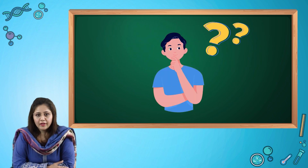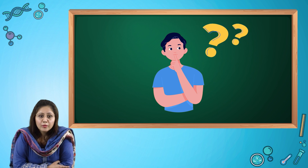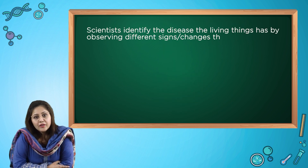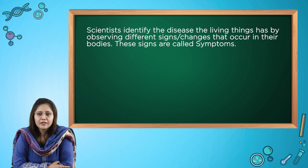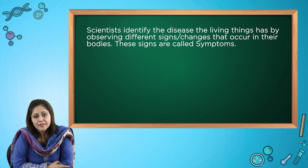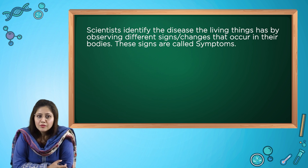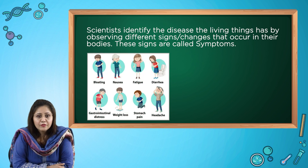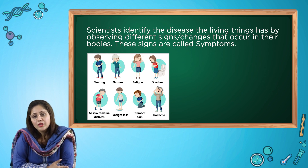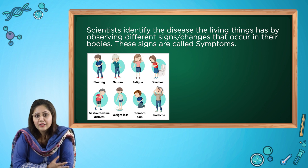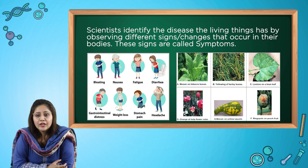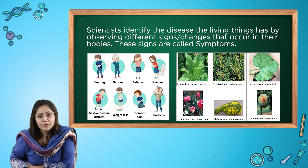Now how do scientists identify that a person is suffering from any disease? Scientists identify the disease a living thing has by observing different signs or changes that occur in their bodies. These signs are called symptoms. Some symptoms for humans are bloating, nausea, fatigue, diarrhea, weight loss, stomach pain, and headaches. There are also many symptoms we can see in plants, like mosaic, yellow leaves, and ring spots on the plants, flowers, or fruits.